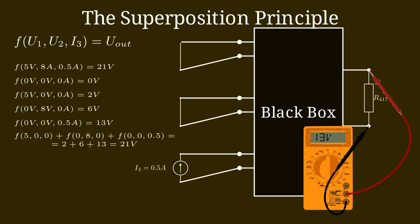This is the superposition principle: the total output voltage from all three power sources together is the sum of each individual contribution — 2 plus 6 plus 13 equals 21 volts, which is what we measured when all three were connected. This means our network is a linear network. To verify linearity, we double the power source E3 from 0.5 amperes to 1 ampere, and observe that the output voltage also doubles from 13 volts to 26 volts.